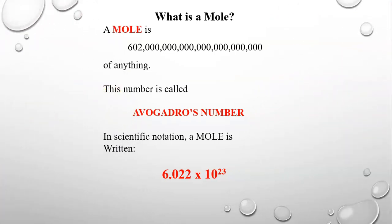What is a mole? A mole is this very long number of anything. Think of it like a dozen. What is a dozen? Well, we often think of a dozen eggs or a dozen donuts, but you can have a dozen of anything. It means 12. It could be 12 cars, a dozen people, a dozen books. It's just a word that represents a certain number.